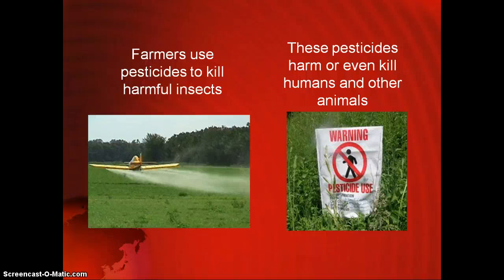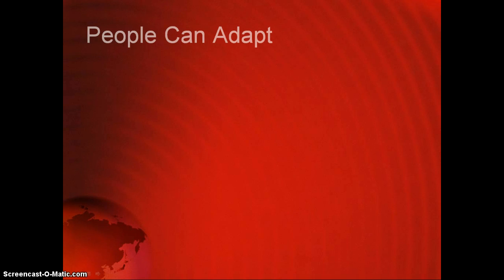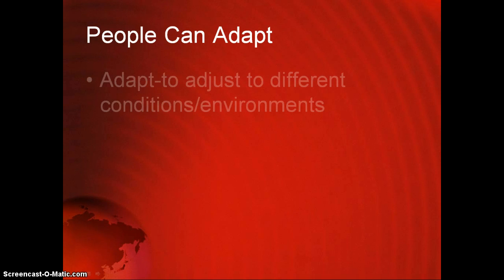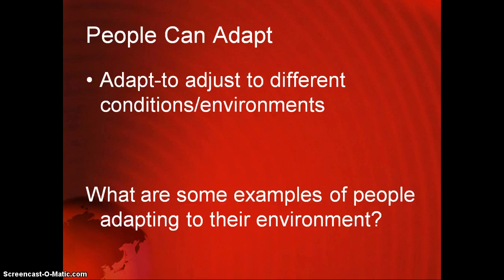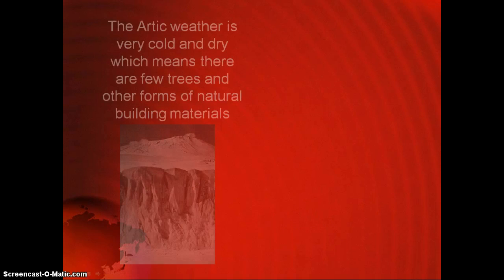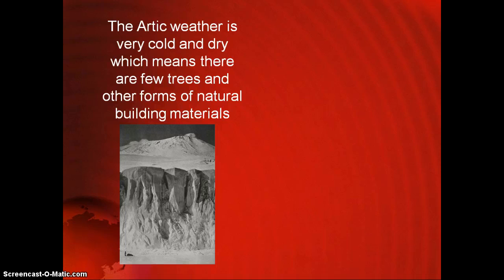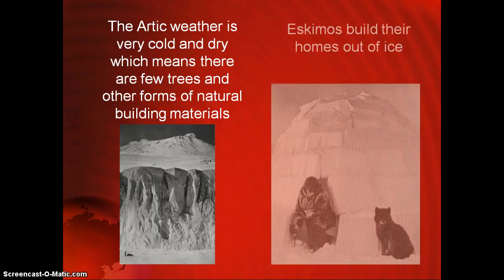Just like people can change their environment, they also have the ability to adapt — to adjust to the different conditions around them. For example, when you wake up and it's snowing, you don't walk outside in a bikini; you adapt by dressing warmly. Another example is the people of the Arctic. It's very cold and dry there, meaning few trees and plants survive, so they have no conventional building materials. They build their homes out of the resources they do have there: ice.